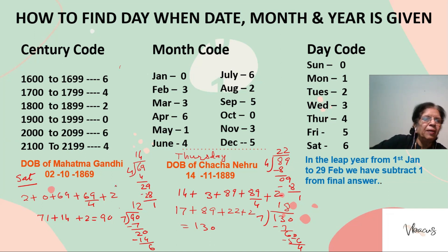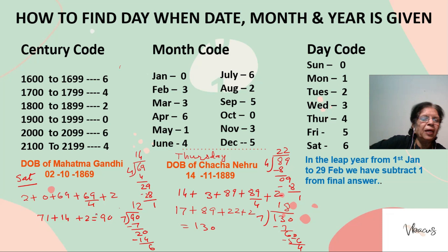Then we add the last two digits of the year: 69. Next, 69 divided by 4 gives a quotient of 14, so we take 14. The century code for 1800–1899 is 2. So the sum is: 69 plus 14 plus 2, plus the date 2 and month code 0, giving us 71 plus 14 plus 2, which becomes 90.